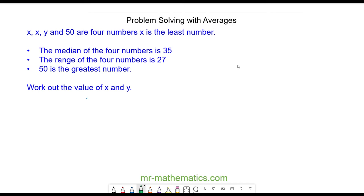In this question we have four numbers. We're told x is repeated twice, we have y, and we have 50. We're also told that 50 is the greatest number and the range of the four numbers is 27.